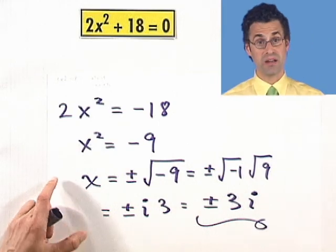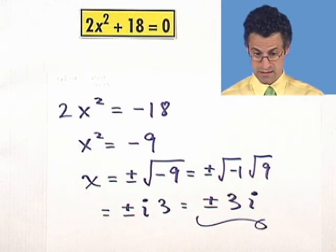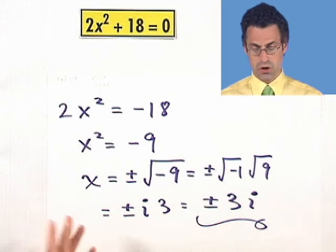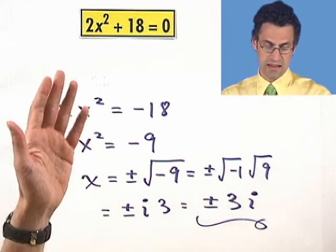Again, two answers, 3i and negative 3i. So neat. The point is that you can solve quadratics. Sometimes the answers might not be very real. But I am there to protect you.